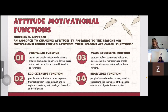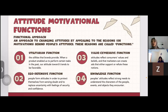The ego defensive function helps people replace uncertainty with feelings of security and confidence. The third is the value expressive function, which reflects consumer values and beliefs — marketers can create ads that either support or refute this notion. The fourth is the knowledge function, where people's need for truth reflects a strong need to understand the characteristics of the people, events, and objects they encounter.